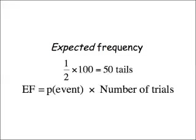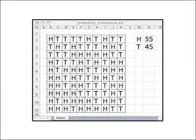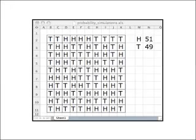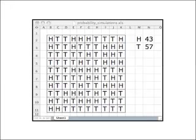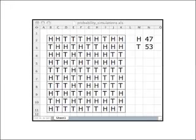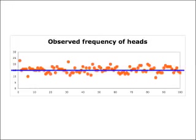Expected frequencies. The expected frequency of something happening is the probability of that event times the number of trials. So if you toss a coin a hundred times, you'd expect to get 50 tails. It doesn't always work. If I simulate it on a spreadsheet, as you can see, when we actually do the experiment, most of the time it's close to 50 heads, but not quite. If I do a whole run of experiments using 30 coins, most of the outcomes are fairly close to 15 heads, which is what you'd expect, but there are some quite large divergences.